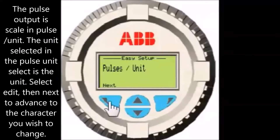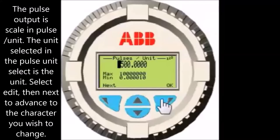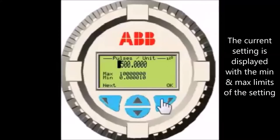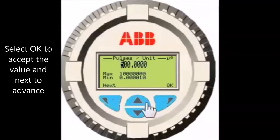The pulse output is scaled in pulses per unit, the unit being the unit selected in the pulse unit selection. Select Edit — the current setting is displayed with the minimum and maximum setting limits; these limits cannot be exceeded. Select Next to advance to the character you wish to change and use the up and down arrow soft keys to change the value. Select OK to accept the value and then select Next to advance.